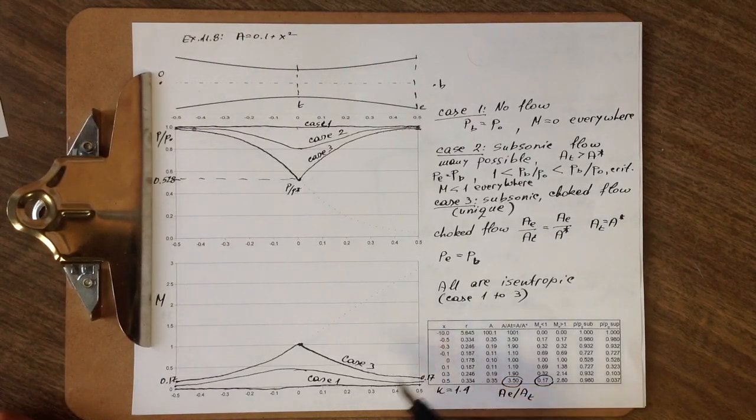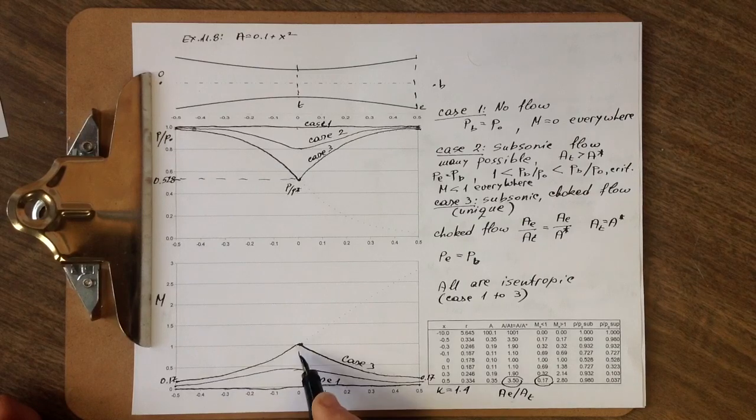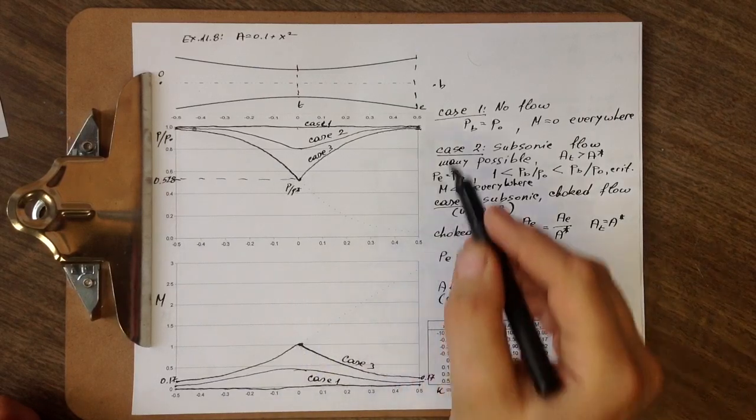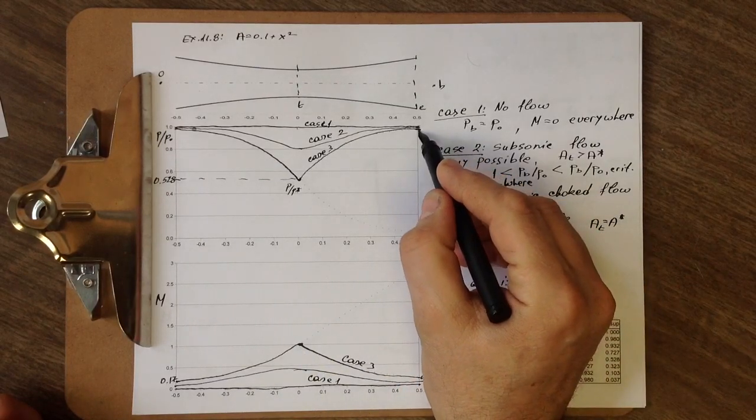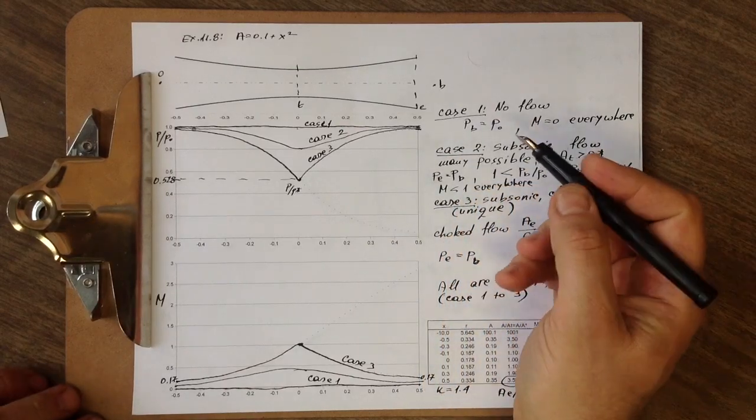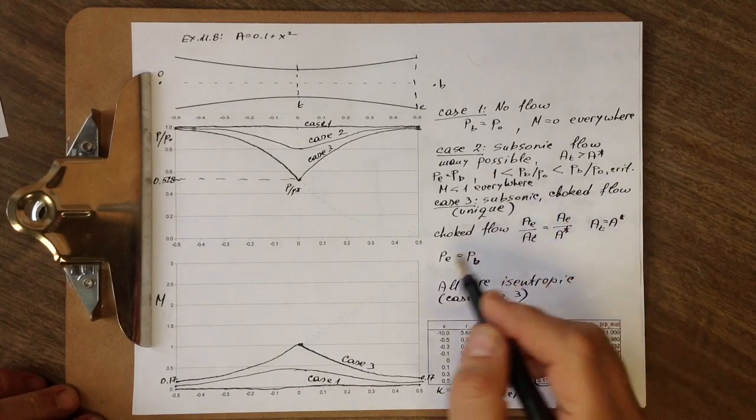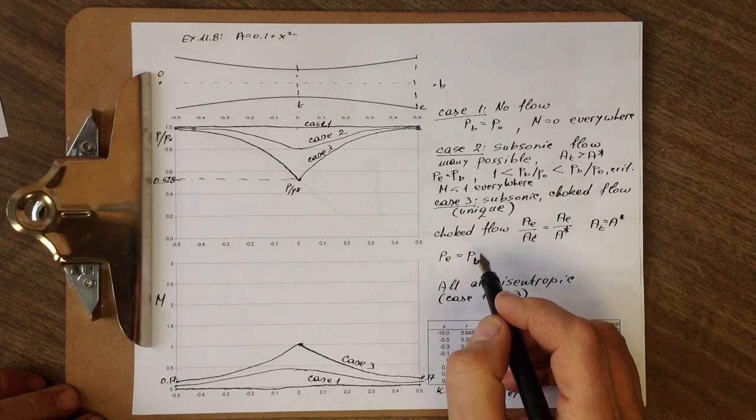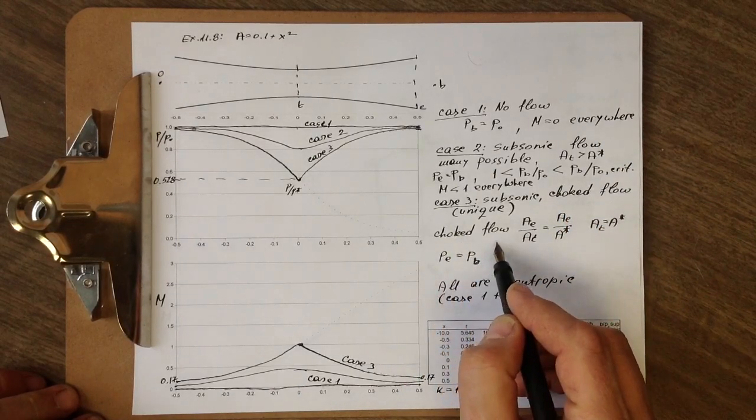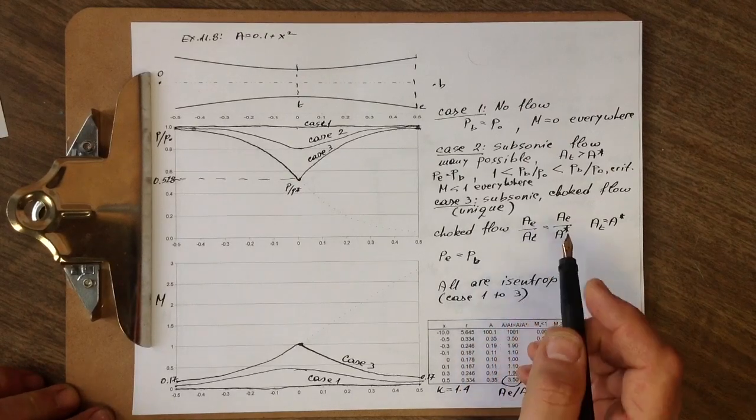So how do we know that Mach number reached one at this particular back pressure? Because remember, the back pressure is the thing that we really control. This is where we enter the concept of choked flow, which is nothing else but saying that the flow velocity at the throat reached sonic velocity.